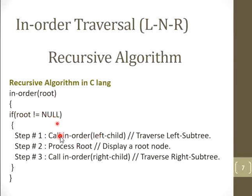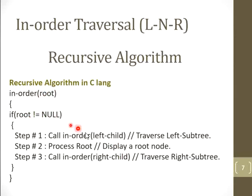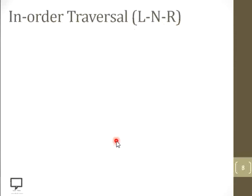Once the condition is false, we have to process the root node and move forward for the next statement, which is passing the right child to the function call in-order. Passing the right child makes it the root node again. Let's check whether root is not equal to null — if true, call in-order recursively by passing the current root node's left child. I am going to explain all these things in detail with the help of an example.